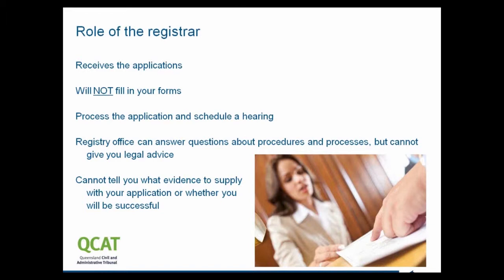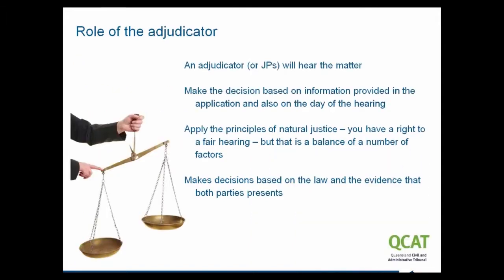The role of the adjudicator is important for people to understand. All adjudicators are legally trained and have broad experience, as do the JP panels — one of the justices of the peace will be legally trained. They make a decision based upon the evidence — the material you put before the tribunal — and the law. The law consists of two things: the Act (the RTRA Act) and previous cases. The tribunal also has regard to the QCAT Act and the Acts Interpretation Act in relation to service and timeframes.